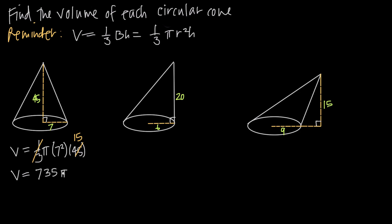We'll leave our answers exactly in terms of π. But you could give a decimal approximation using 3.14 as an approximation for π, or a fractional approximation using 22/7. But in this case, volume is equal to 735π.